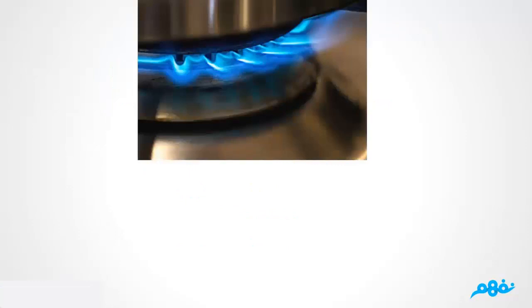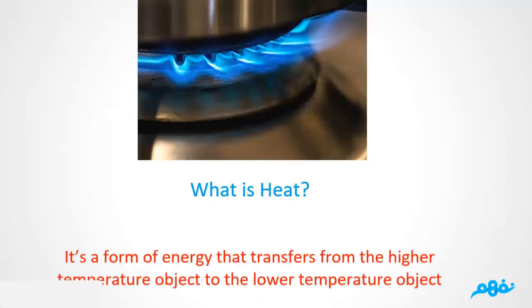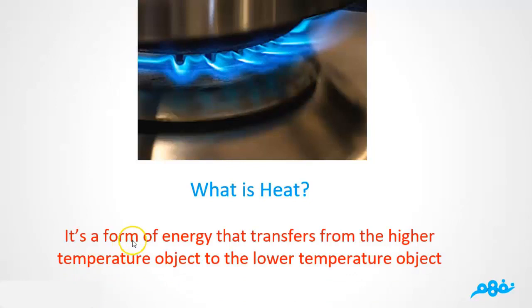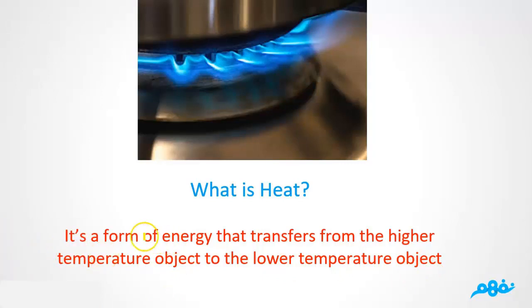Number three, determine the usages of good and bad conductors of heat. So what is heat? Heat is basically a form of energy — that's right, it's a form of energy that transfers from the higher temperature object to the lower temperature object.